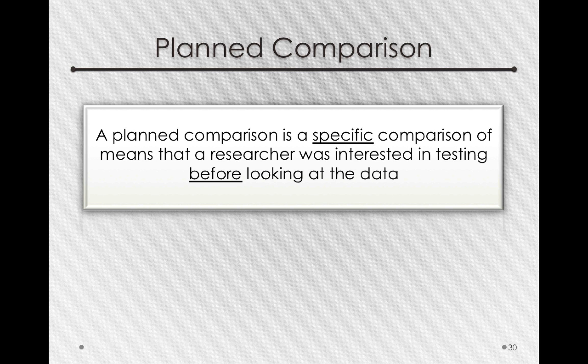Now, a planned comparison is a specific comparison of means that a researcher was interested in testing before looking at the data. Before here is really critical. If the data has suggested a comparison because you see that two means happen to look different, then you're using the data to choose which test to run. So a planned comparison is one that before you even ran the study, you knew you were interested in comparing.